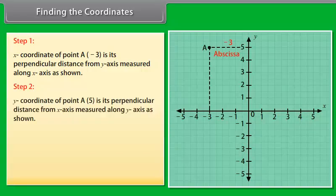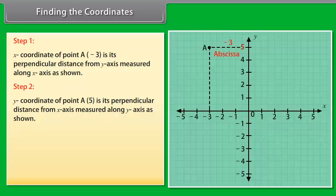Step 2: The y-coordinate of point A is 5. It is the perpendicular distance from the x-axis, measured along the y-axis, as shown below.